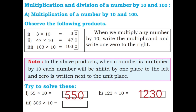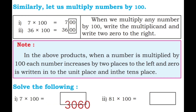Try to solve these. 55 into 10: 55 ones are 55, append 0, so 550. 123 into 10: 123 ones are 123, append 0, so 1230.